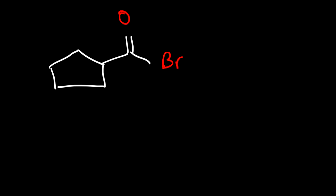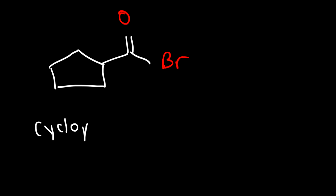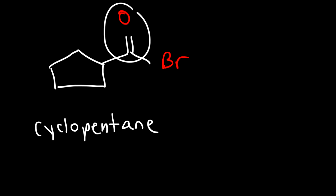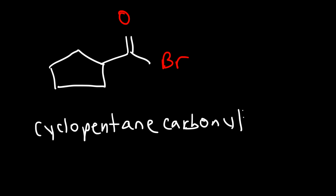What if we have an acid bromide instead of an acid chloride? We have a cyclohexane ring, so cyclohexane, and we have a carbonyl functional group attached to a bromide — cyclopentane carbonyl bromide. Now let's try one more example.